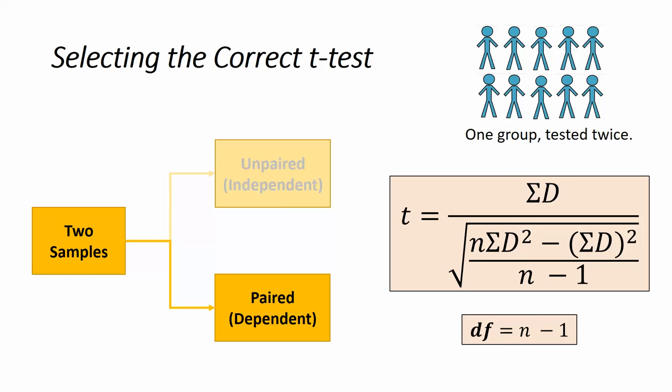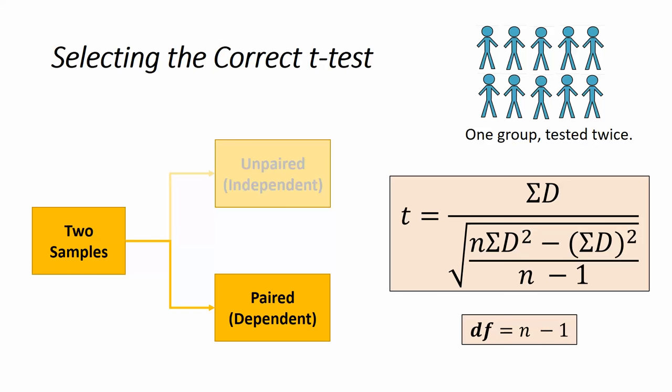Now let's look at when we have paired or dependent samples. In this test, we generally have one group being tested twice — a very common variation is a before-and-after situation. The t-statistic formula is quite different here: there is no sample variance and no means being calculated. The key element is the sum of the differences, represented as sigma D. We subtract each pair of values, add all the differences up to get our sum of D. N in this formula represents the number of pairs, and degrees of freedom is simply N minus 1.